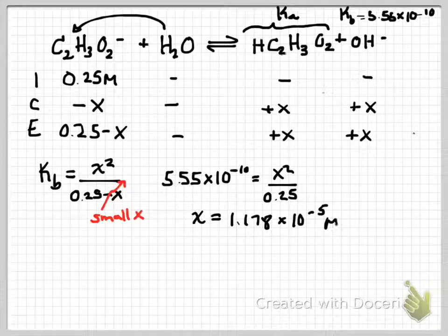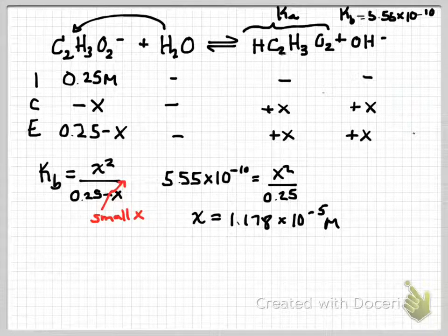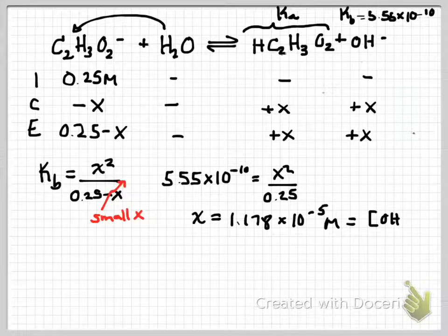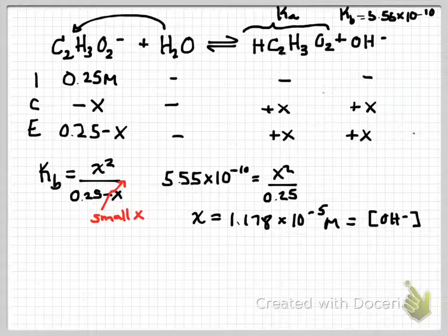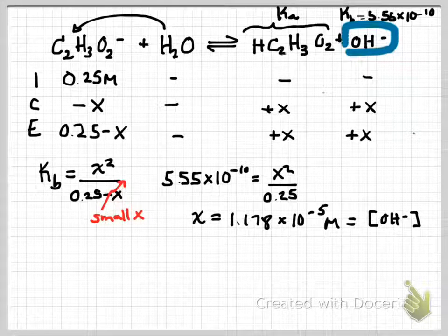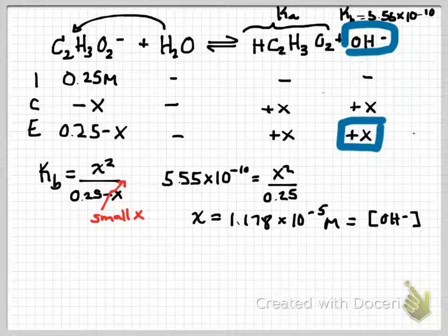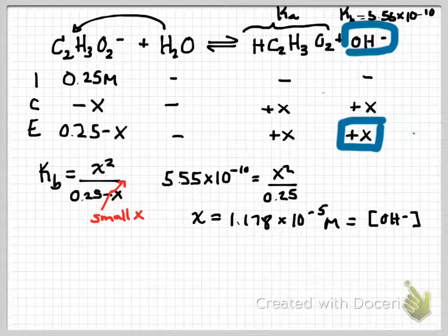Ignoring the negative root because that is obviously erroneous, X equals the OH minus concentration. Because remember, when dealing with this, the OH is what we're dealing with as X. Be careful that you don't assume that is the pH or the H3O plus.